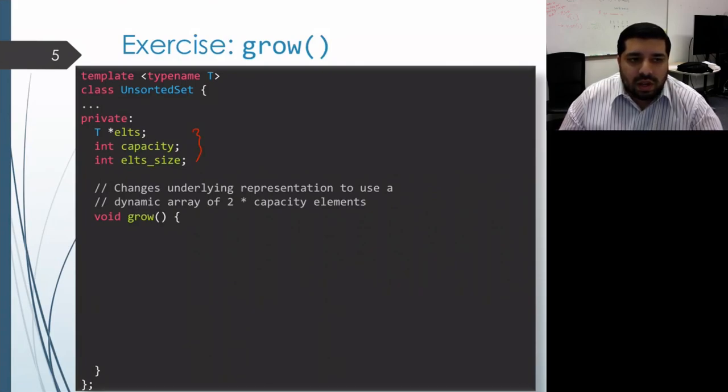So what it needs to do is allocate a new array that's twice as big, copy over the elements from the older array into the new array, and then set the set to be pointing at the new array.